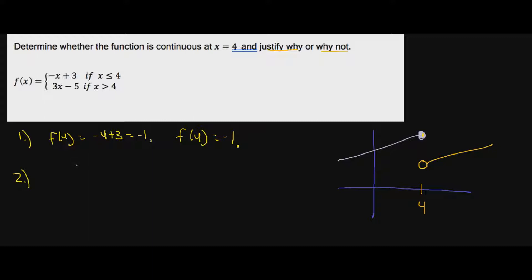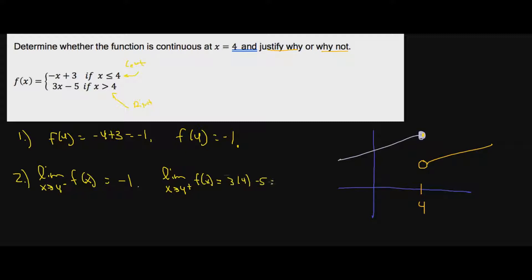Number two: we have to determine whether the limit exists. This is the trickier part, because you have two different equations from the left and from the right. Since x is less than or equal to four, that gives us the limit from the left. Since x is greater than four, that gives us the limit from the right. The limit as x approaches four from the left — we already plugged in four into the top equation — is negative one. The limit as x approaches four from the right: three times four minus five equals 12 minus five, which is seven. So the left and right limits are not equal, meaning the limit does not exist.